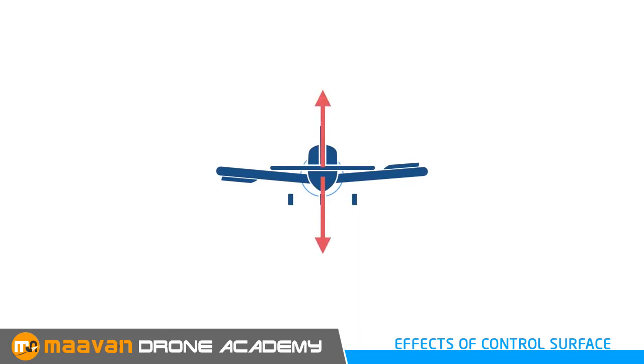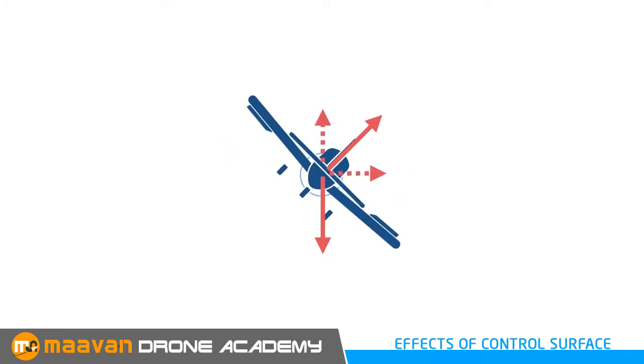The primary effect of the ailerons is a roll. As the aeroplane rolls, the lift force rolls with it. Now that the vertical component of the lift is smaller and no longer supports the aeroplane's weight, it causes the aeroplane to slide down.